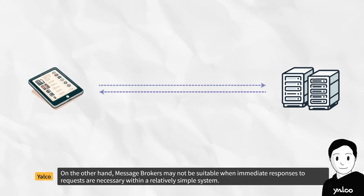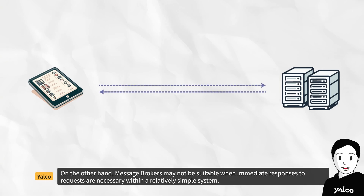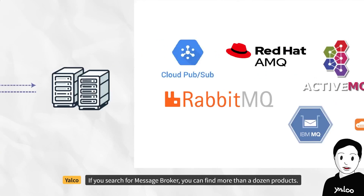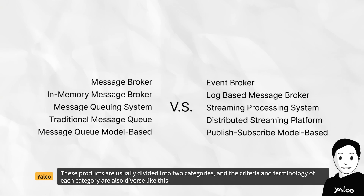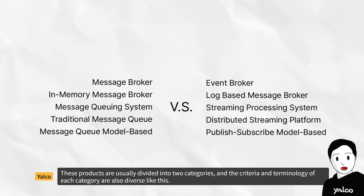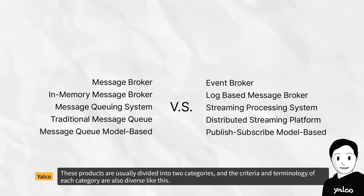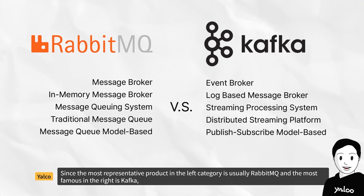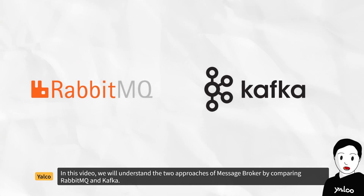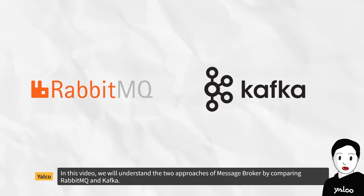On the other hand, message brokers may not be suitable when immediate responses to requests are necessary within a relatively simple system. If you search for message broker, you can find more than a dozen products. These products are usually divided into two categories, and the criteria and terminology of each category are also diverse. The most representative product in the left category is usually RabbitMQ and the most famous in the right is Kafka. In this video, we will understand the two approaches of message brokers by comparing RabbitMQ and Kafka.